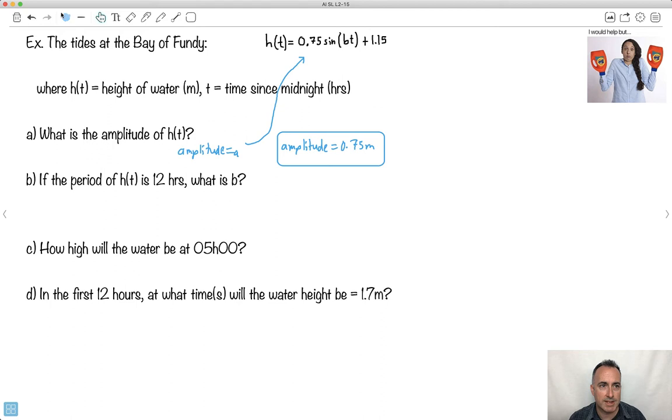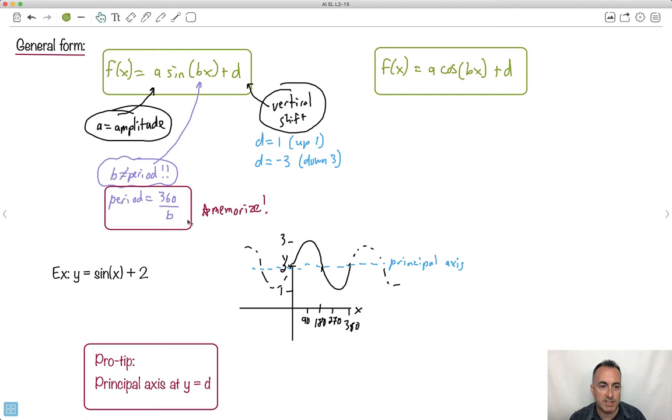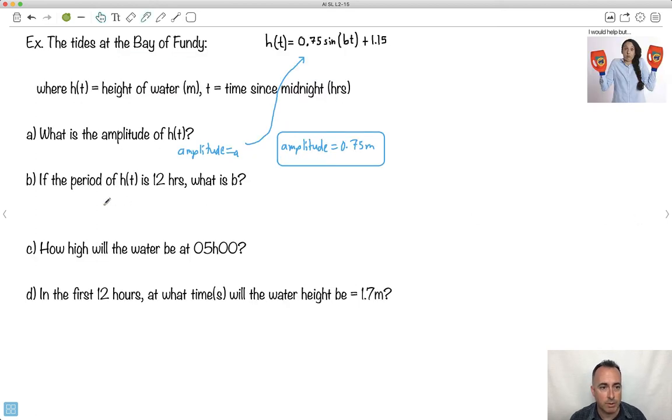Now, the period is 12 hours, so they tell us that now. We're going to have to use this to find B. You remember the period is 360 over B. So I'll write it down: period equals 360 degrees over B. But now I know that the period is 12, so 12 equals 360 over B. Because of that, B equals 360 over 12. So it's 30.